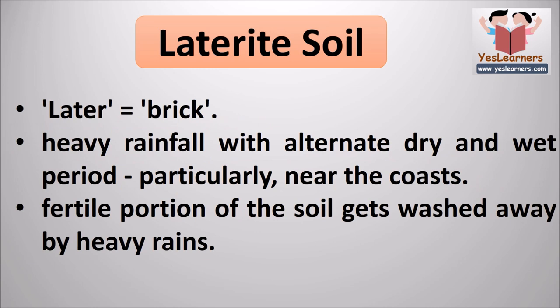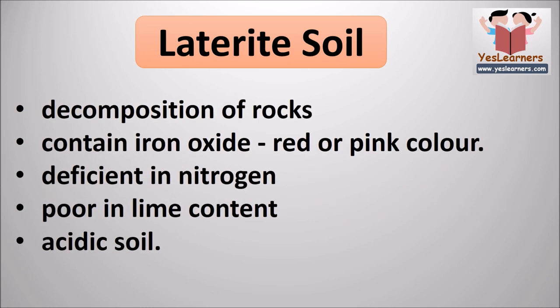Laterite soil is found in regions that receive heavy rainfall with alternate dry and wet periods, particularly near the coasts. This soil becomes soft when wet and hardens when dry. In these climatic conditions, leaching of soil takes place, a process in which the fertile portion of the soil gets washed away by heavy rains. This type of soil is normally deficient in nitrogen, poor in lime content and is acidic in nature.